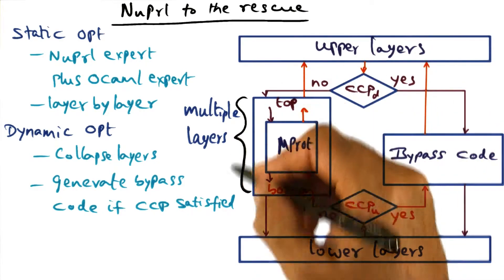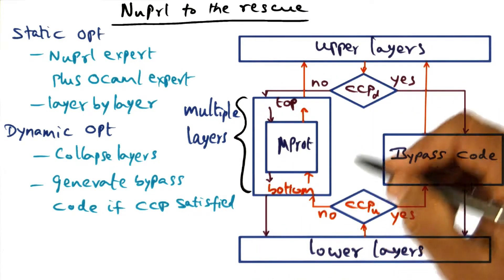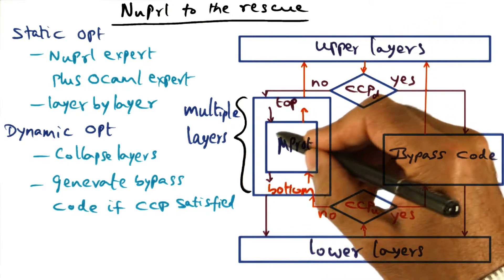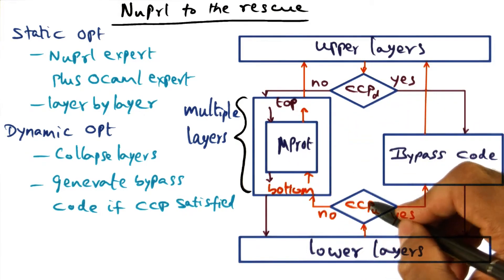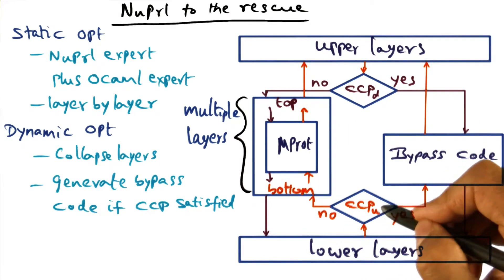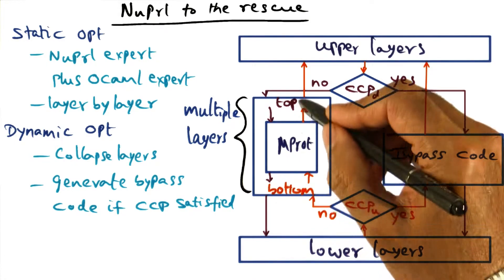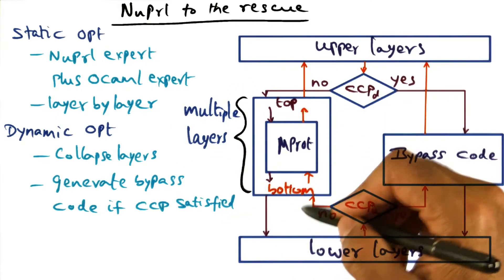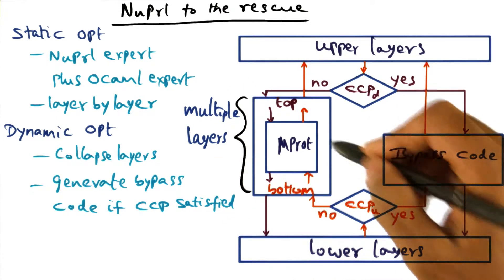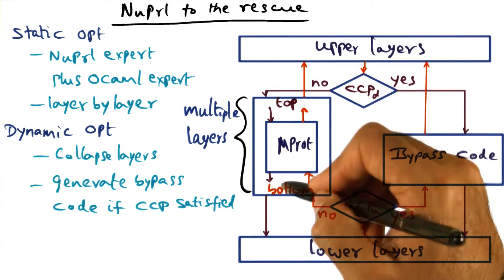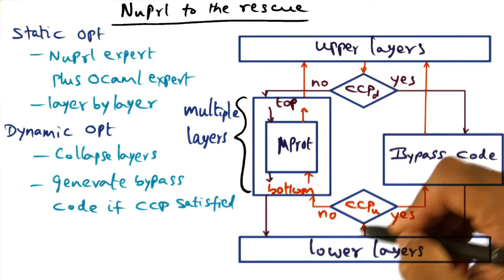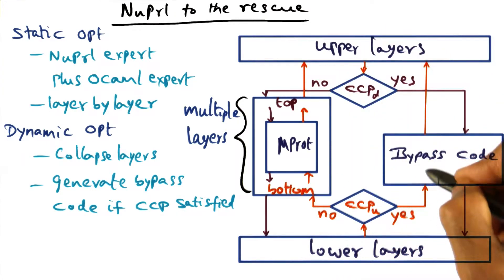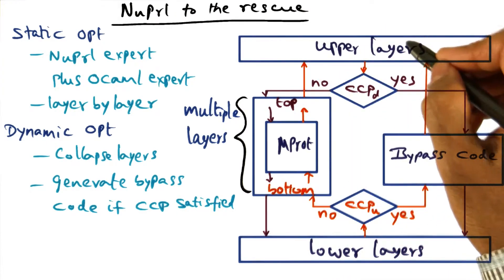This kind of framework can be applied to every layer. You can take a single layer and find out what the common case predicate is for that micro protocol, and use that predicate to decide whether to use the bypass code or go through the micro protocol. We can also collapse multiple layers and derive a common case predicate that collapses all of these layers into a single predicate. If it is satisfied, you can eliminate processing the packet through all of those layers and simply go through the bypass code to reach the upper layers.